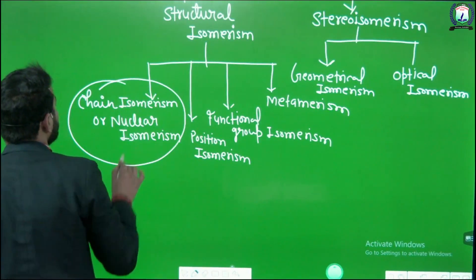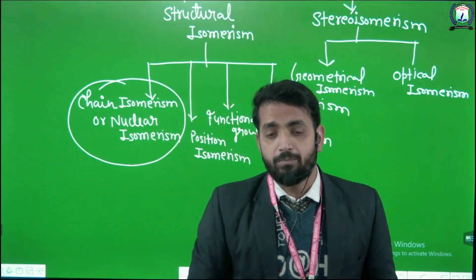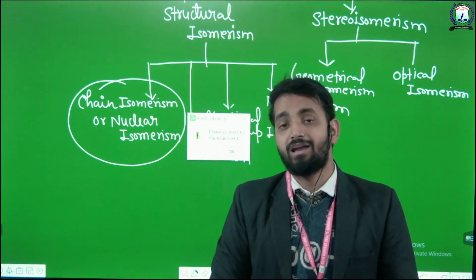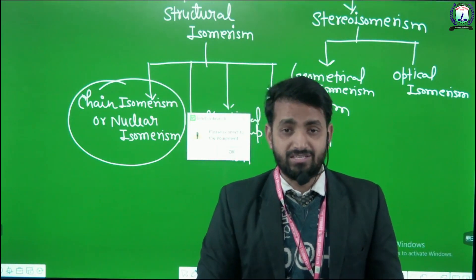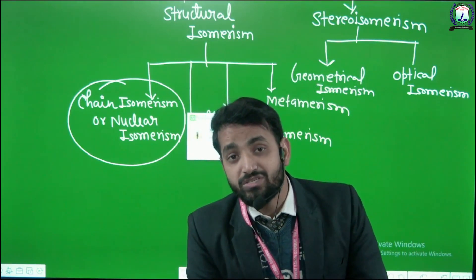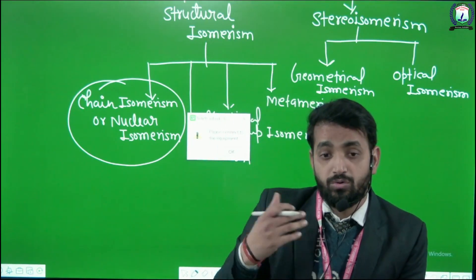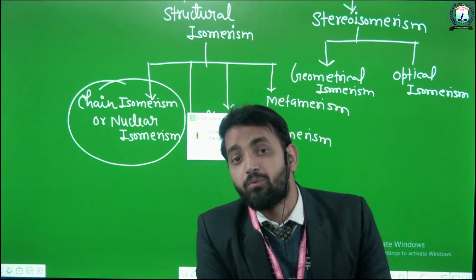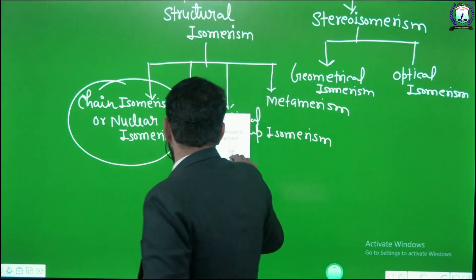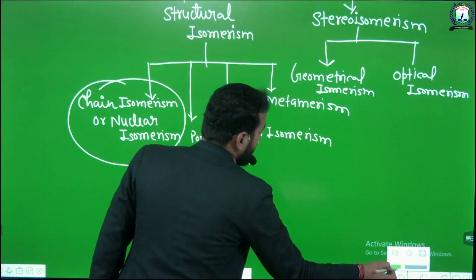Now let us discuss chain or nuclear isomerism one by one. In chain isomerism, the compounds have the same molecular formula but the skeleton of carbon is different. The carbon chain varies from one compound to another, which is why it is called chain isomerism.